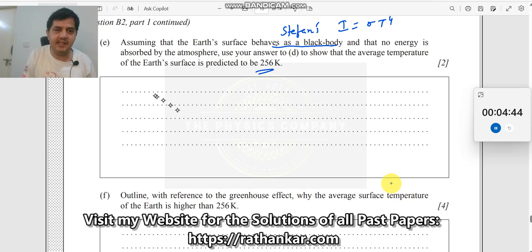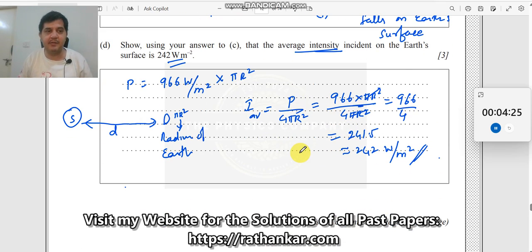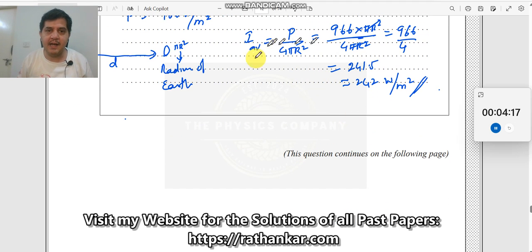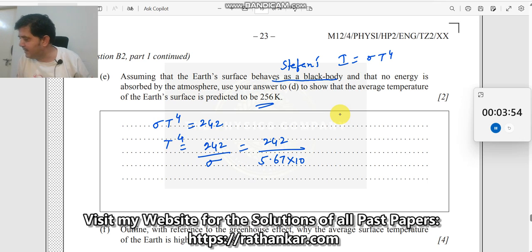What I should do: intensity is already sigma T power 4. Sigma T power 4 should be equated to 242. Why 242? Assuming earth to be a black body means whatever radiation we receive on the earth's surface, I am going to re-radiate it backwards. Earth is now receiving an average intensity of 242, I am going to re-radiate it back. Therefore, I can find the value of T: T power 4 equals 242 by sigma. I can substitute the value of sigma, which is Stefan's constant, which is 5.67 into 10 to the power of minus 8, from the data booklet.